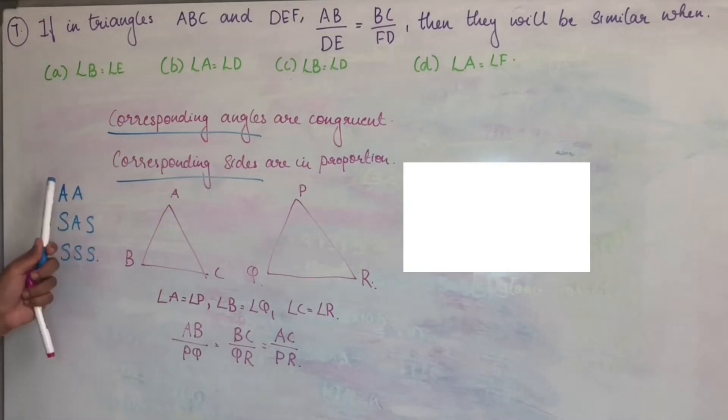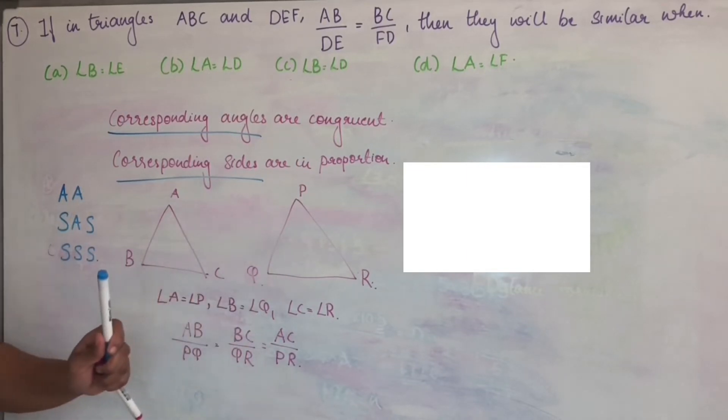SSS similarity theorem. If corresponding angles are congruent, we can say that two triangles are similar. Similarly, two sides proportional and included angle congruent,